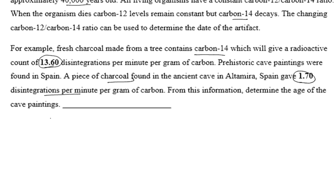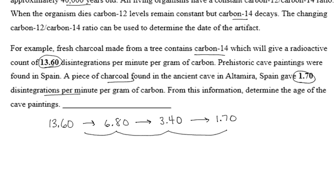We haven't used disintegrations per minute before, but let's look at it in terms of half-lives. After the first half-life, 13.6 becomes 6.80. After a second half-life, disintegrations become 3.40. After a third half-life, disintegrations per minute will be 1.7. So we can see it's gone through three half-lives. So 3 times 5,715 shows that charcoal was 17,145 years old, and the assumption is that the paintings are also 17,145 years old.